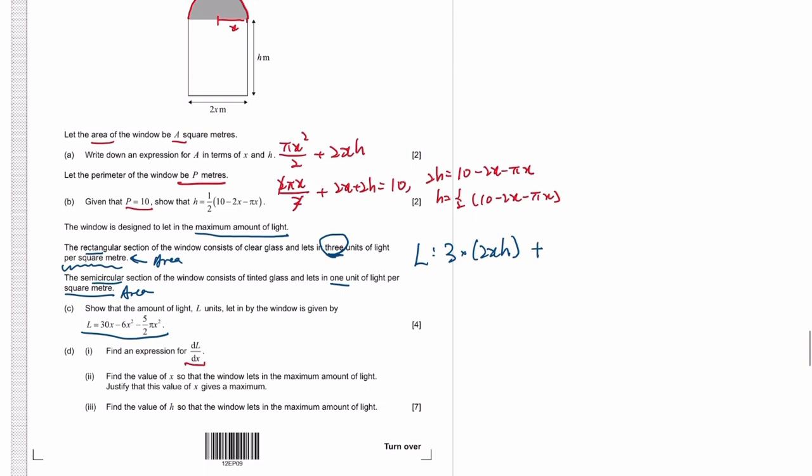Plus the semicircle part, let in 1 unit of light per area. The area of the semicircle is πx² over 2. So the semicircle part is quite useless. You can't directly use it.